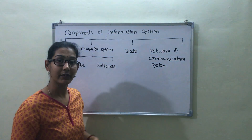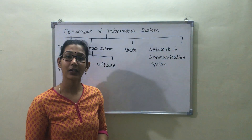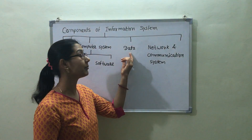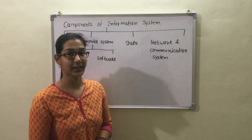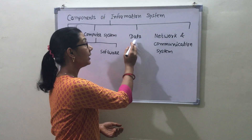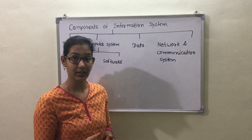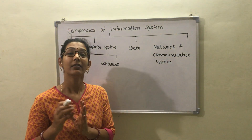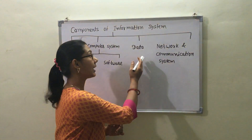The next component is data. Data is a raw fact which is meaningless on its own. It can be quantitative or qualitative and has no context — it is a piece of information without meaning until processed.